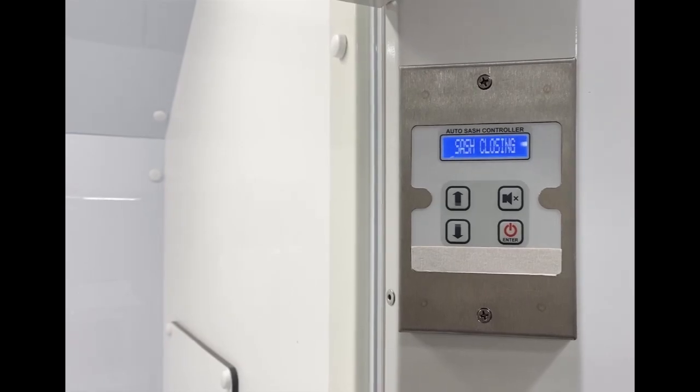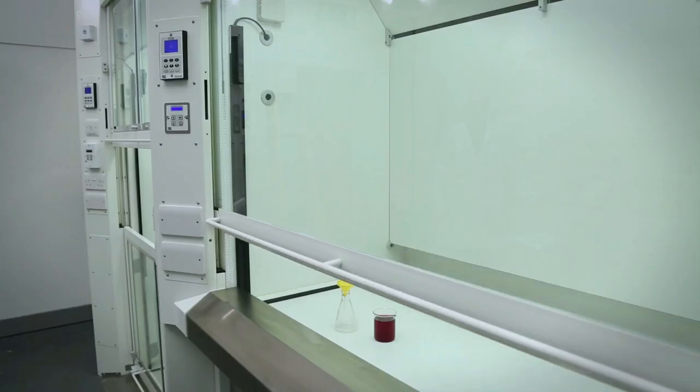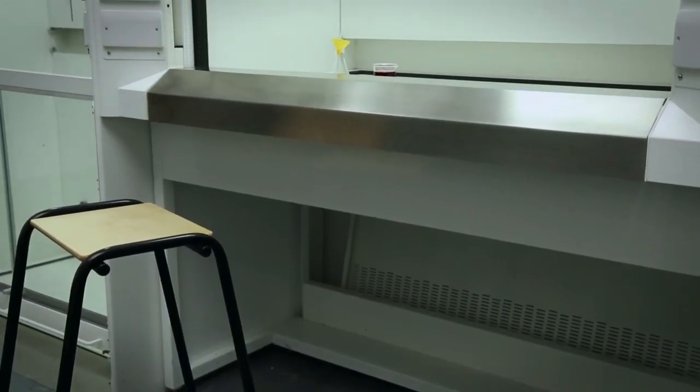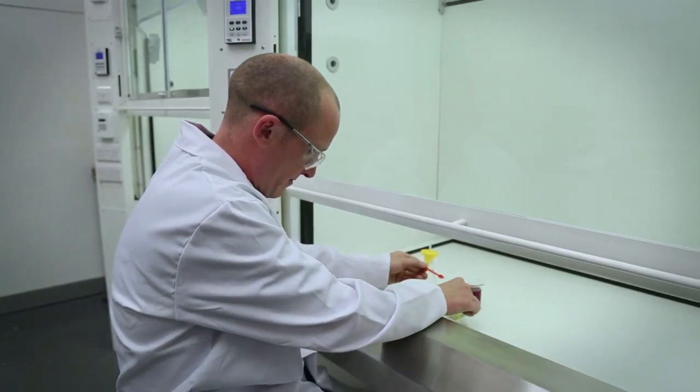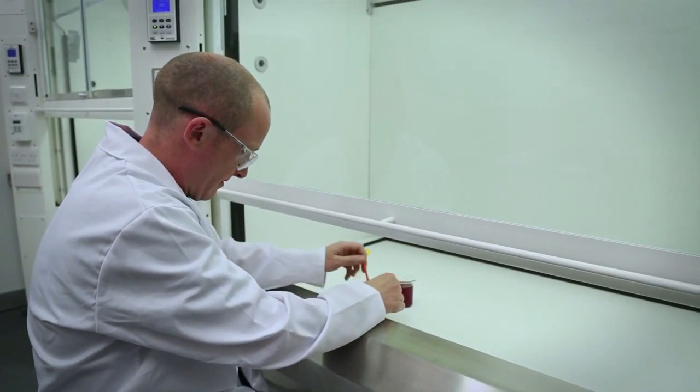Auto sash controller is designed to close the sash automatically when the operator is not present in front of the fume hood. Passive infrared sensor constantly monitors the work area in front of the hood. The system also detects the presence of the user without continuous movement.